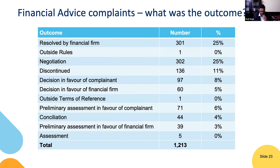Income protection insurance continues to be a big one — advice on indemnity value policies where small business owners weren't covered in the way they thought they would be. Looking at outcomes: of the 1,200 financial advice complaints, 25% — a quarter — are resolved by the firm directly, which is the main aim we're trying to achieve. 10% are discontinued, which isn't ideal as it may mean complainants gave up. Decisions in favour of the complainant are 8%, and 5% in favour of the financial firm — slightly higher towards the complainant, though it does oscillate.